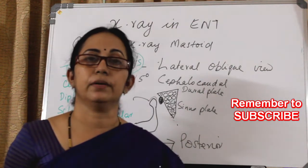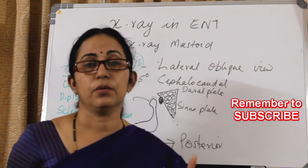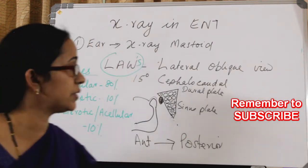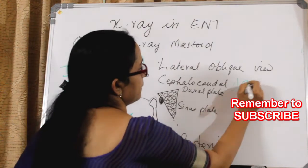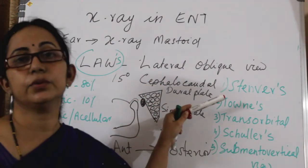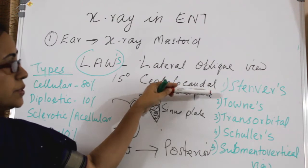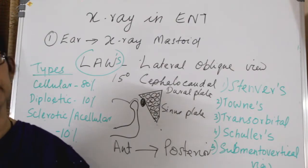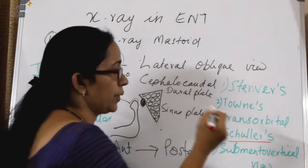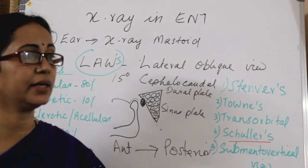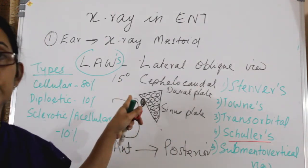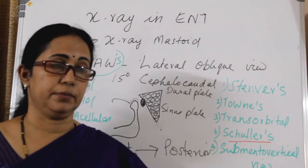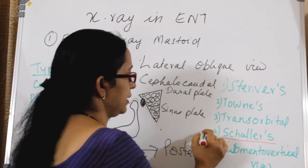One commonly used view is the Laws view or lateral oblique view. There are other views as well: Stenver's view, Towne's view, trans-orbital view, Schuller's view, and submentovertical view. In Schuller's view you can see the key areas — the attic, aditus and antrum — which are not seen in the Laws view.